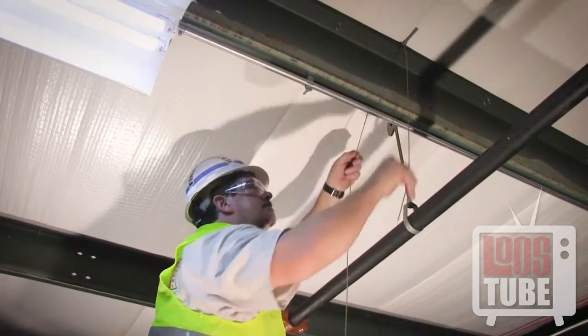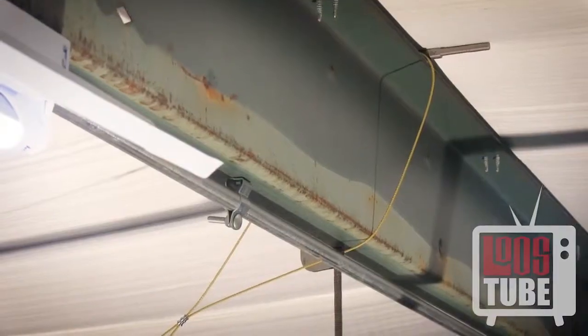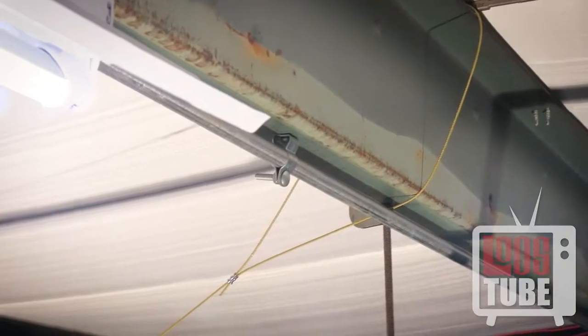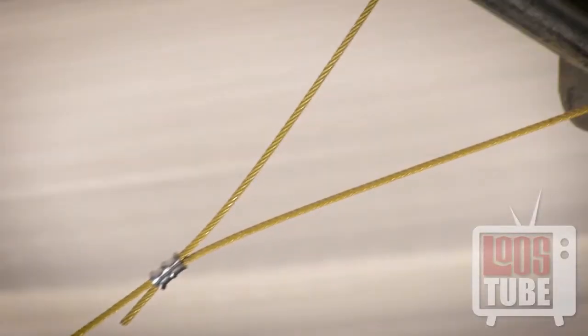The first method of attaching to the structure is wrapping the cable around a steel beam or the top or bottom cord of a bar joist, then swaging an oval sleeve. Be sure to avoid swaging the sleeve too close to the joist. The angle maintained by the loop should be less than 45 degrees.